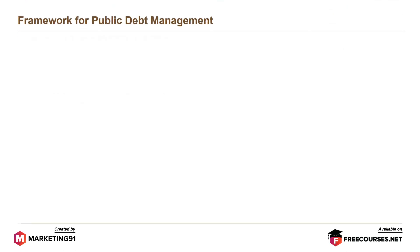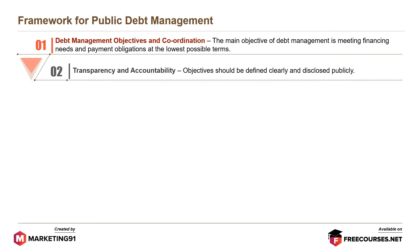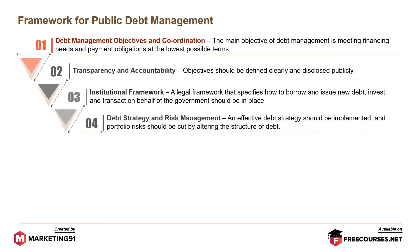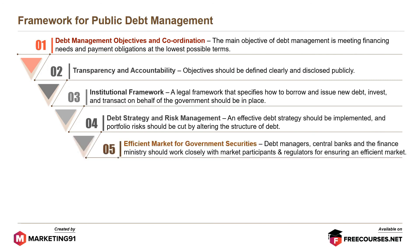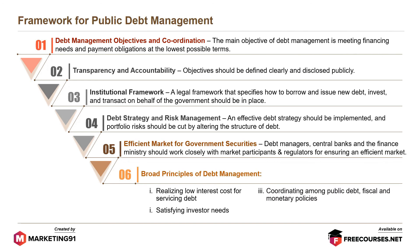The framework for public debt management includes: Debt Management Objectives and Coordination — the main objective is meeting financing needs and payment obligations at the lowest possible terms. Transparency and Accountability — objectives should be defined clearly and disclosed publicly. Institutional Framework — a legal framework specifying how to borrow, issue new debt, invest, and transact on behalf of the government. Debt Strategy and Risk Management — an effective debt strategy should be implemented and portfolio risks reduced. Efficient Market for Government Securities — debt managers, central banks, and the finance ministry should work closely with market participants. The broad principles of public debt management include realizing low interest costs, satisfying investor needs, coordinating among public debt, fiscal and monetary policies, and funding short-term debt into long-term debt.